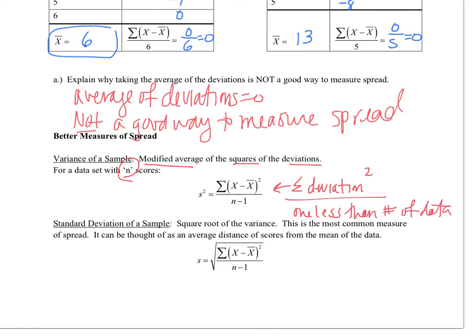Standard deviation is going to be the square root of that previous answer — the variance. Standard deviation is something talked about quite a bit, and a lot of people don't really know where it comes from. This is the most common measure of spread, and another way of thinking of it is as the average distance of scores from the mean of the data.